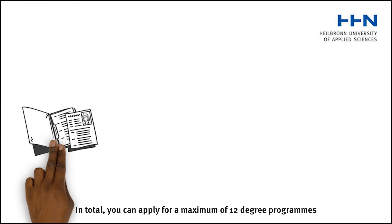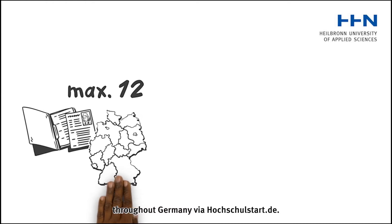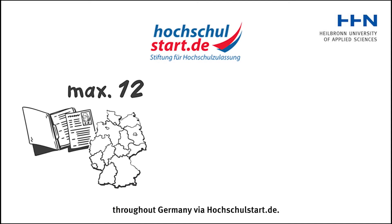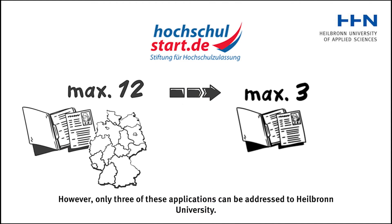In total, you can apply for a maximum of 12 degree programs throughout Germany via Hochschulstart.de. However, only three of these applications can be addressed to Heilbronn University.